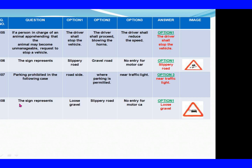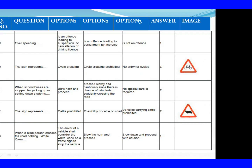Question 108: The sign represents. Option 1: Loose gravel. Option 2: Slippery road. Option 3: No entry for motor car. The right answer is Option 1: Loose gravel. Question 109: Overspeeding. Option 1: Is an offence leading to suspension or cancellation of driving license.